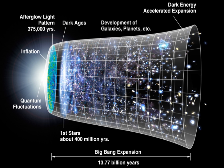Detailed observations of the morphology and distribution of galaxies and quasars are in agreement with the current state of the Big Bang theory. A combination of observations and theory suggest that the first quasars and galaxies formed about a billion years after the Big Bang, and since then larger structures have been forming, such as galaxy clusters and superclusters. Populations of stars have been aging and evolving, so that distant galaxies — observed as they were in the early universe — appear very different from nearby galaxies observed in a more recent state. Moreover, galaxies that formed relatively recently appear markedly different from galaxies formed at similar distances but shortly after the Big Bang.